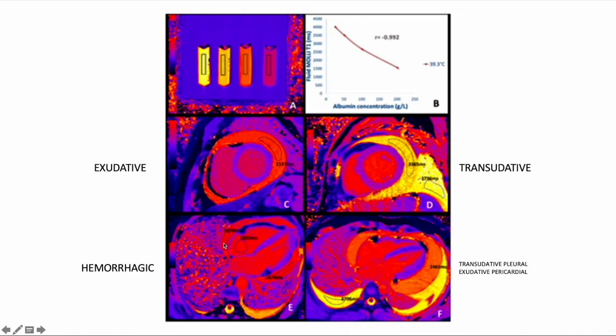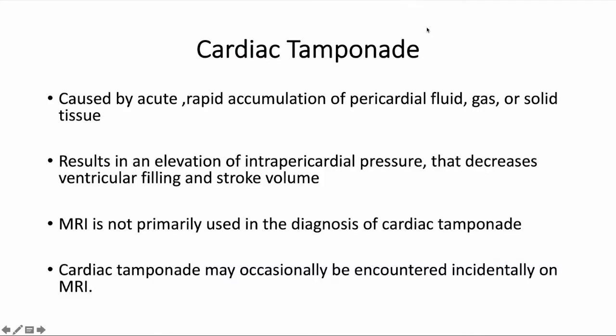This is an example of hemorrhagic pericardial effusion where T1 values of the blood pool are very close to those of the pericardial fluid, prompting us to call it a hemorrhagic effusion. Coming to cardiac tamponade: whenever there is rapid accumulation of fluid, gas, or solid mass in the pericardial cavity, the patient tends to develop cardiac tamponade. This results in elevation of intrapericardial pressure that decreases ventricular filling and eventually decreases stroke volume, causing symptoms. MRI is usually not the primary modality to diagnose cardiac tamponade — it is usually diagnosed on echo. Let us look at the signs of tamponade on cardiac MRI.